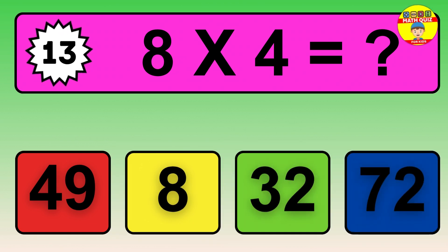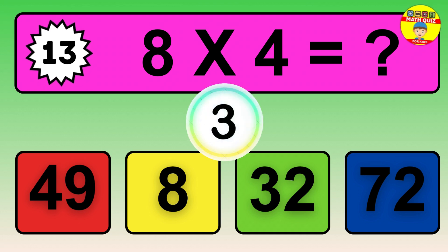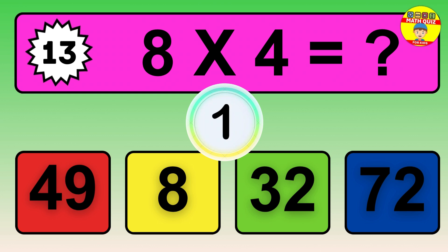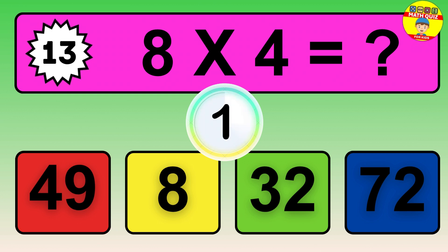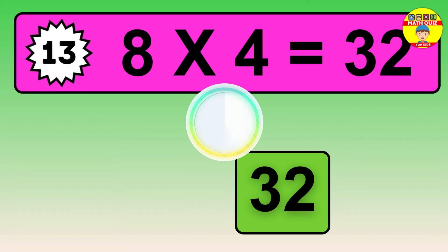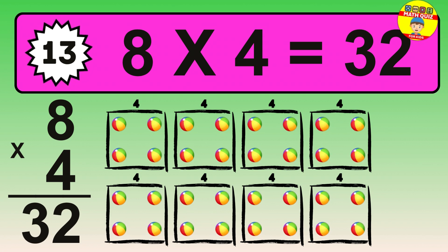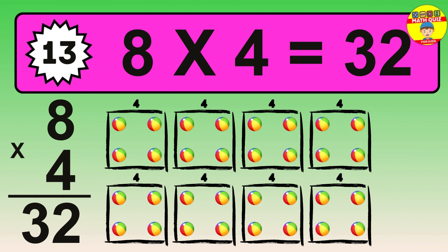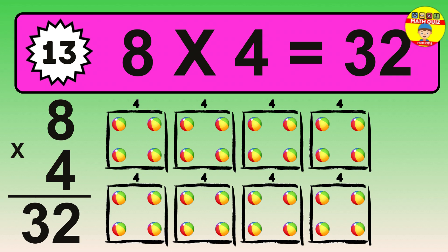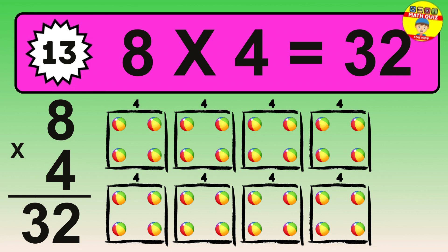Question 13. 8 times 4 equals what? The answer is 8 times 4 is 32. To calculate, we have 8 groups with 4 balls each one.